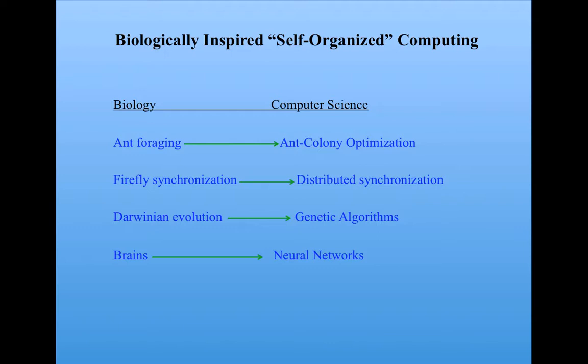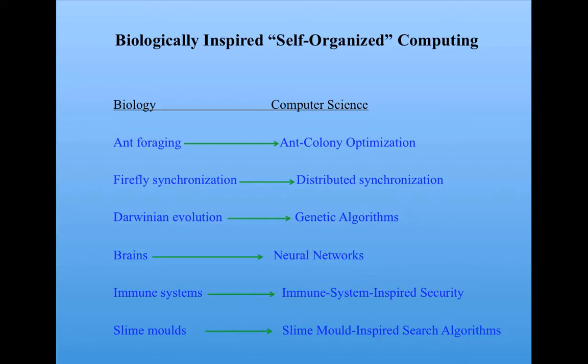As I said, Darwinian evolution has inspired genetic algorithms. Brains have inspired neural networks. Immune systems have inspired algorithms that perform computer security or network security, based on ideas of how the immune system protects the body. And as we saw earlier in these slides, slime molds have recently been inspiring computer scientists to develop new kinds of search algorithms, based on the way that slime molds self-organize from individual cells into a unified whole.